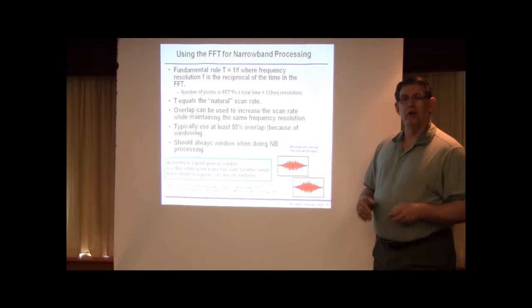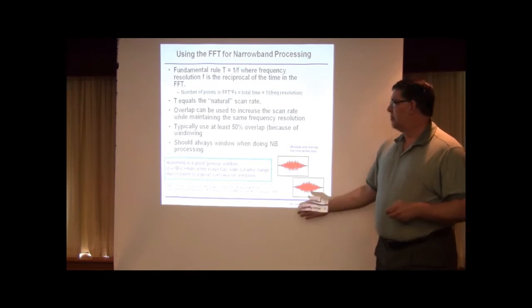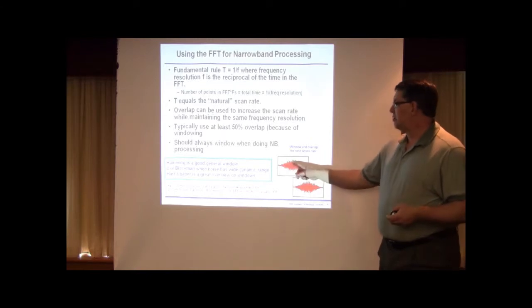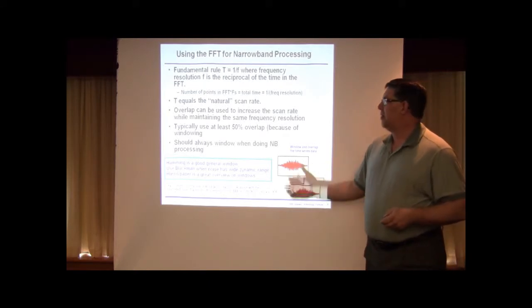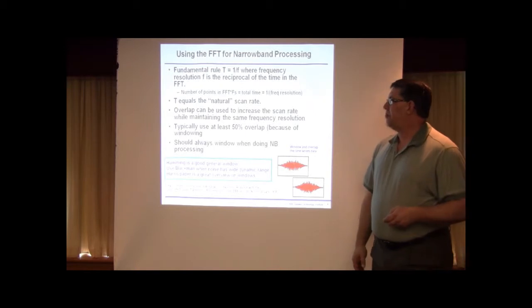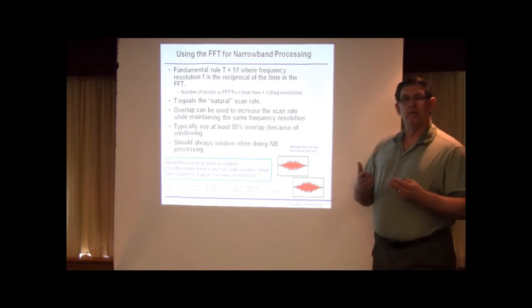The downside of that is, of course, increased computational load and maybe smearing of noise if you do too much of that. Typically we do at least a 50% overlap as shown in this picture because we will window the data, that is drive the data through multiplication of a window down to zero so we remove edge effects. So we usually do a 50% overlap at least, and sometimes more.